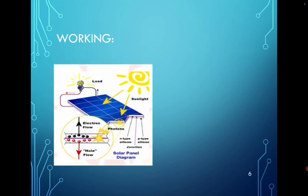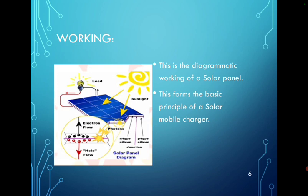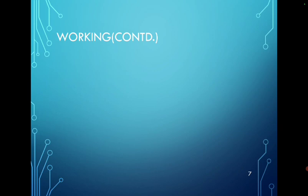Next, working. This is the diagrammatic working of a solar panel. This forms the basic principle of a solar mobile charger. The photons attacking the solar cells are absorbed by semiconductor materials such as silicon. The energy of the absorbed photon is transferred to the electron. This energy knocks off the electron from the atoms. It flows unidirectionally through the material which provides electrical energy. An array of solar cells converts solar energy into usable electrical energy. This is the working principle of a solar mobile charger.